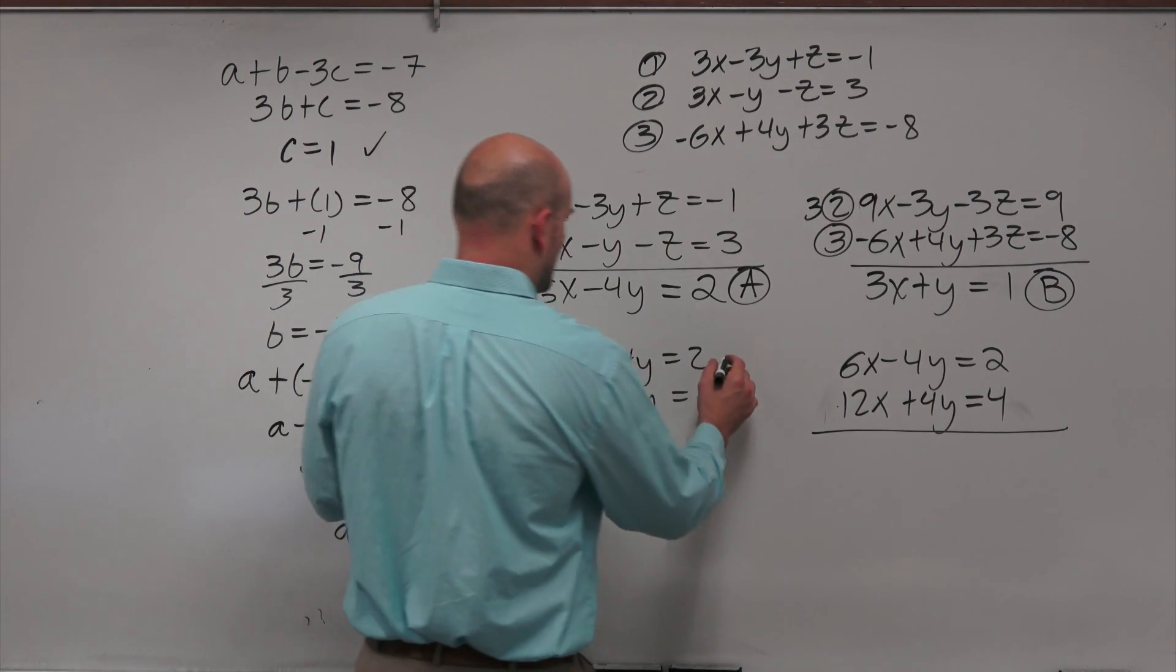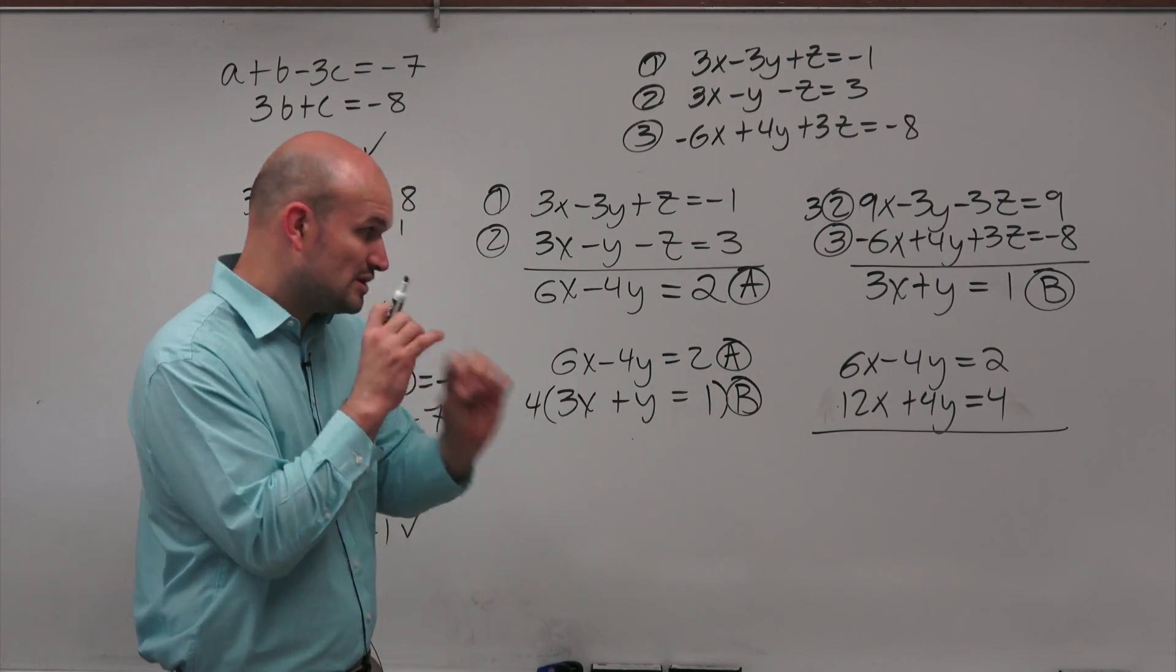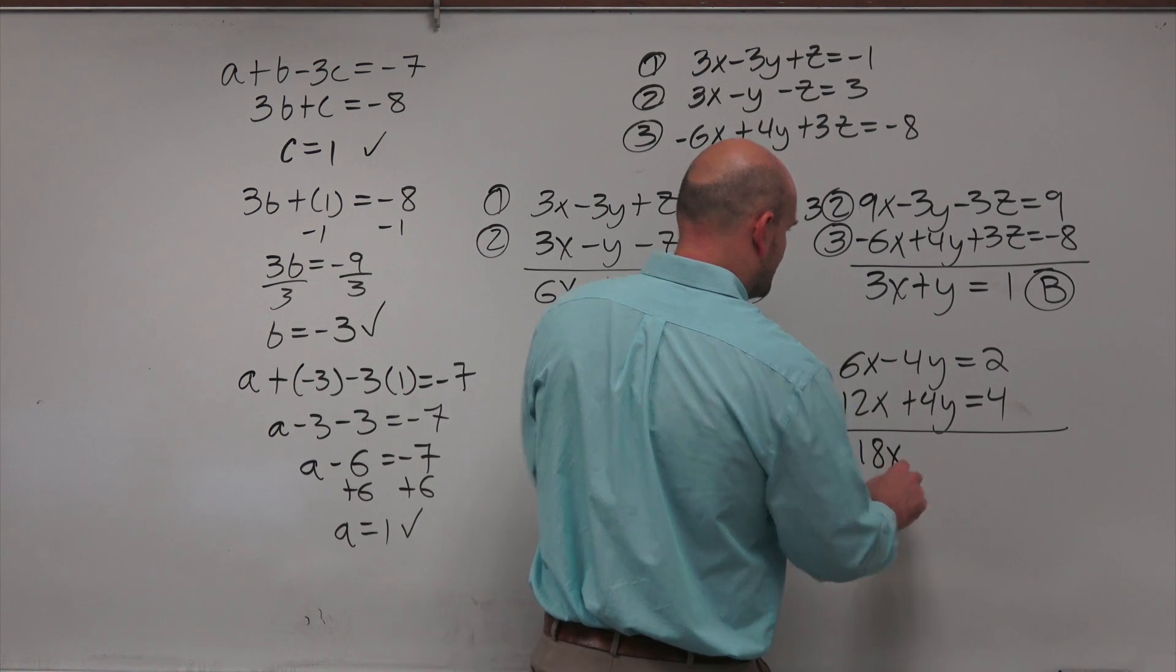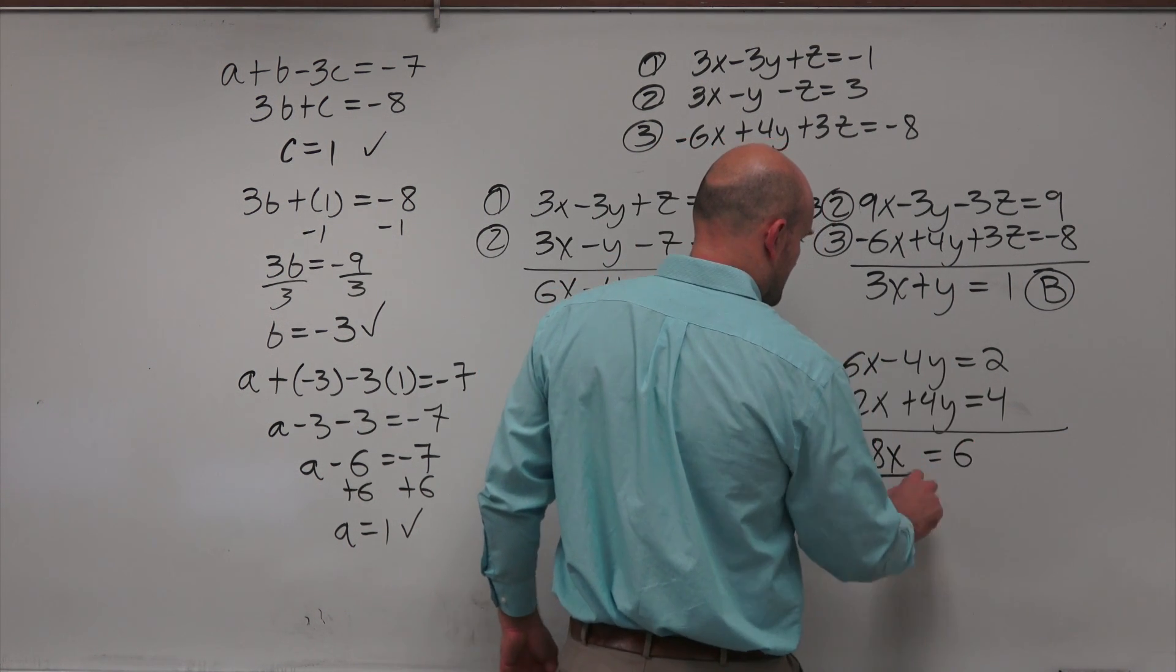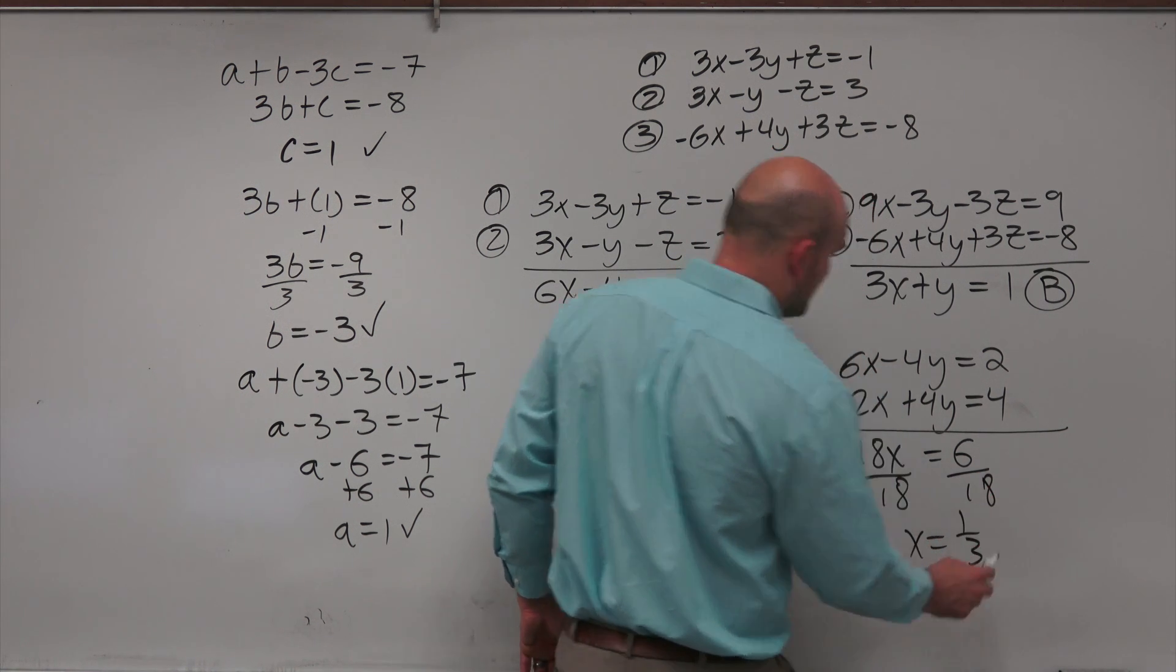So again, I kind of forgot to mention. That's a. And that was b. So you're going to take your system of equations with a and b. And then you add these two up. And you get an 18x. This goes to 0. Equals 6. Divide by 18, divided by 18, x is equal to 1 third.